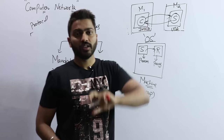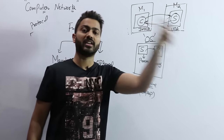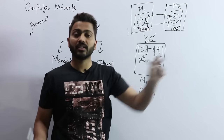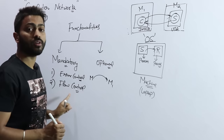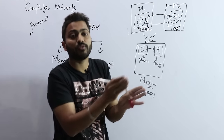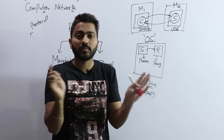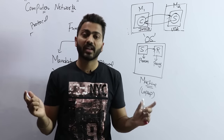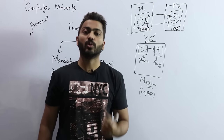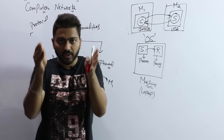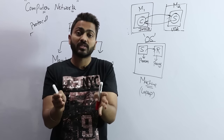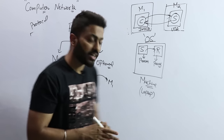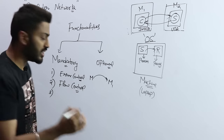Another mandatory functionality is flow control. Flow control means: as a sender I keep sending data to the receiver and flood the network with data — that should not happen. There is some kind of flow control constraint. If we use that constraint, then my network will flow properly; otherwise there are chances of congestion. The protocols running on my system provide these mandatory functionalities.